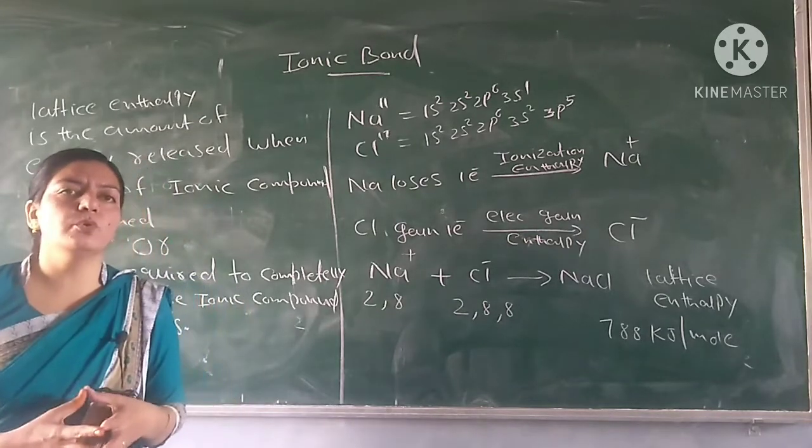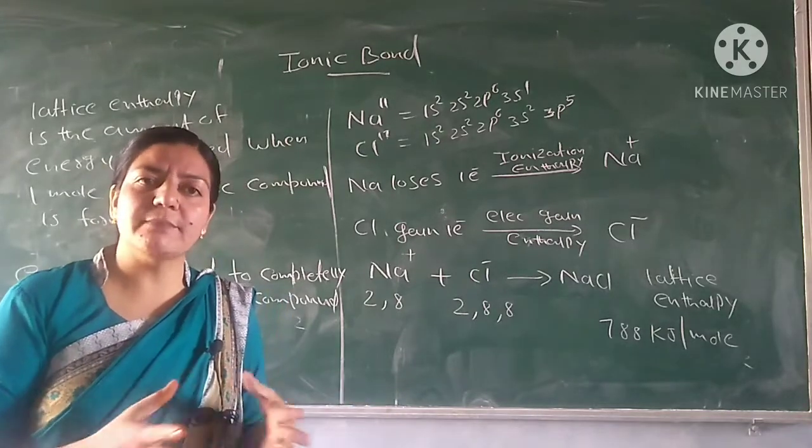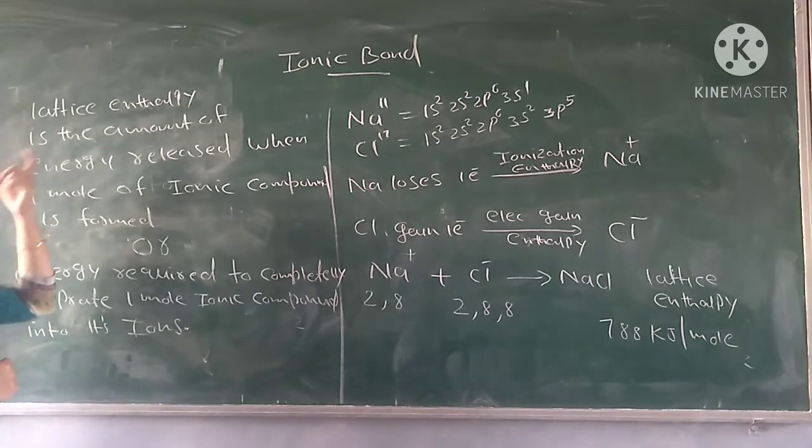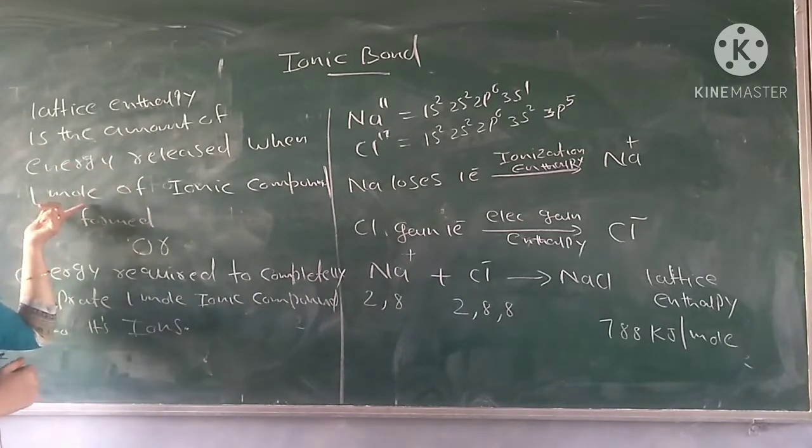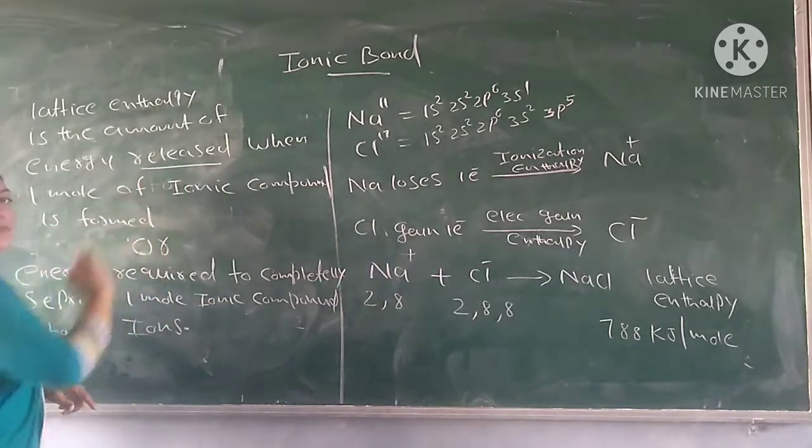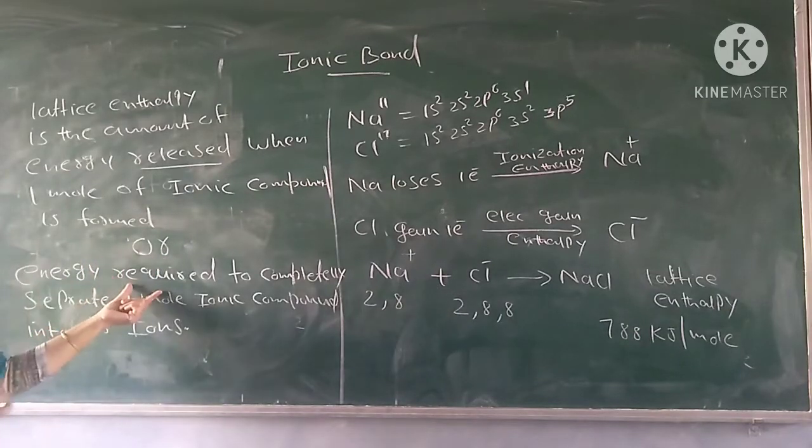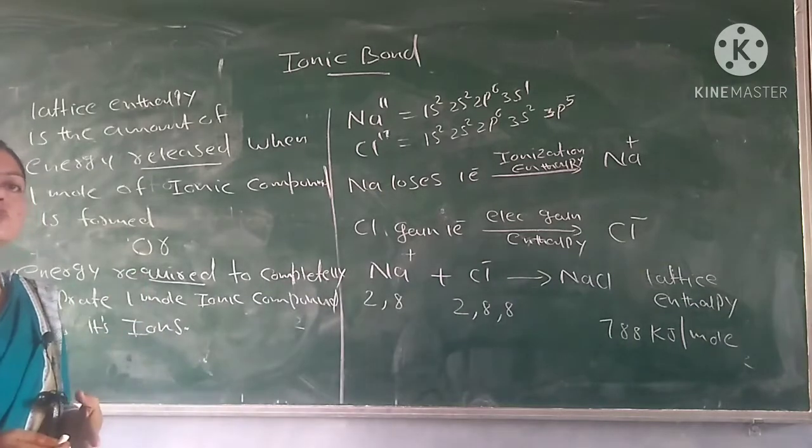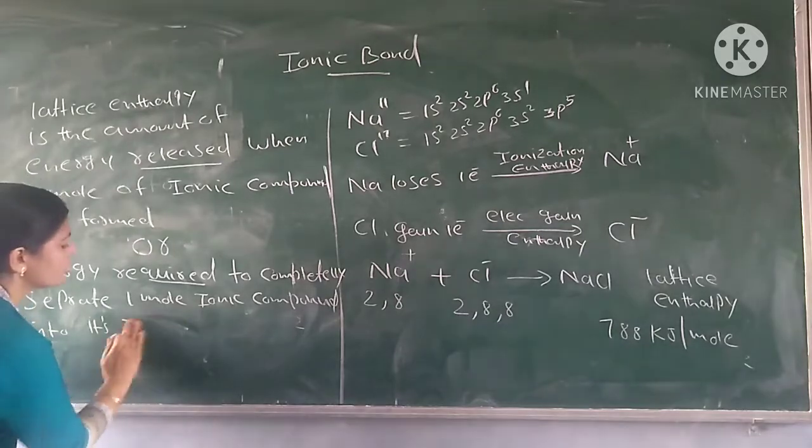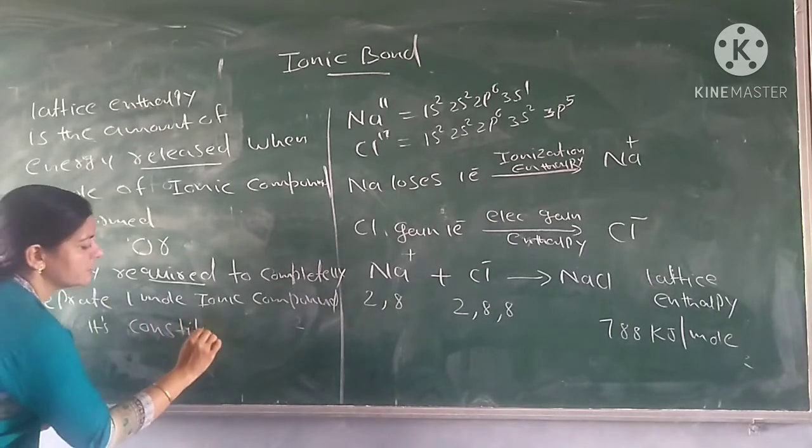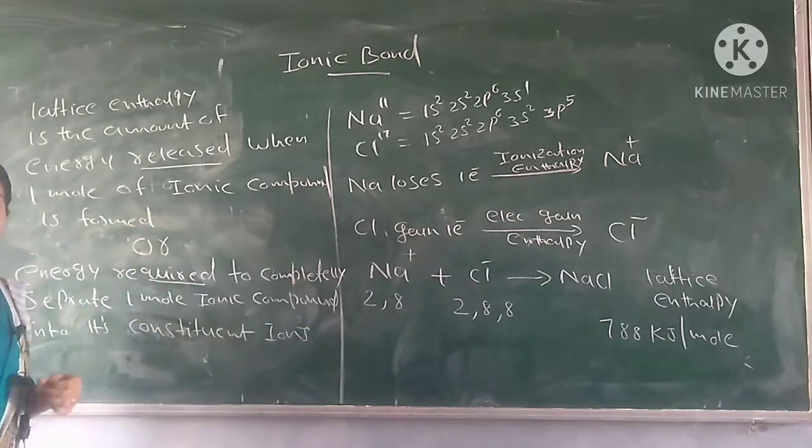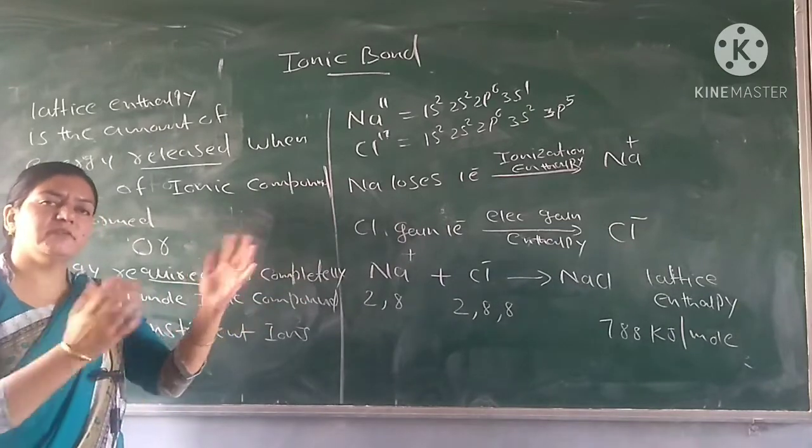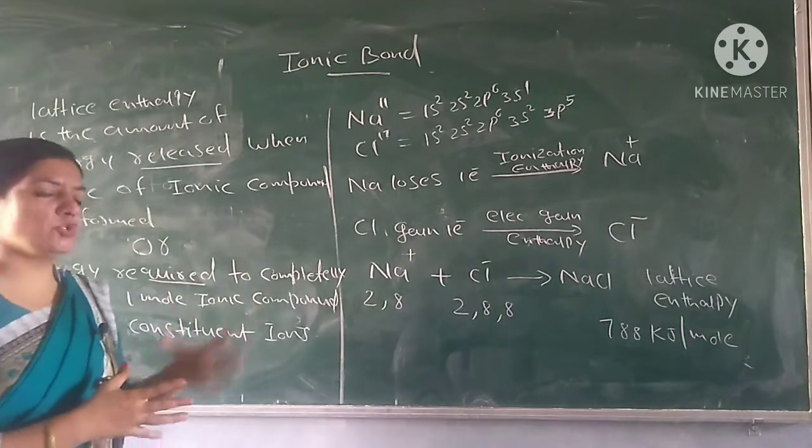When we break down one mole of ionic compound to completely separate its ions, the energy required is lattice enthalpy. We can define lattice enthalpy as the amount of energy released when one mole of ionic compound is formed, or as the energy required to completely separate one mole of ionic compound into its constituent ions. The lattice is a network of ions held together due to strong electrostatic force between positive and negative charges.